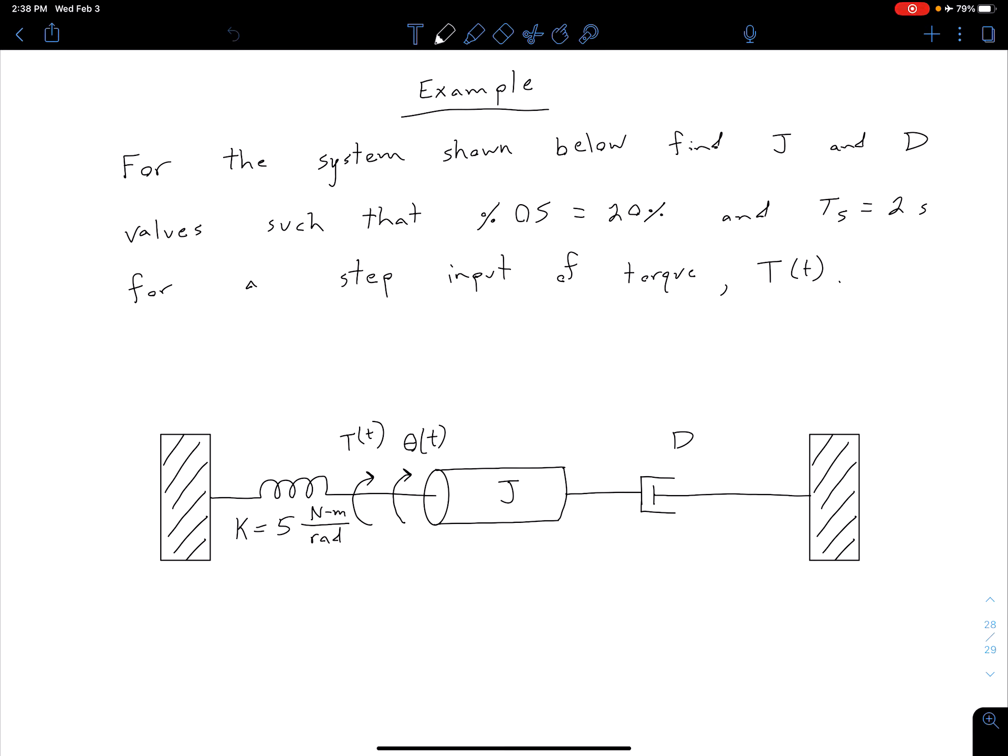So in this example we have some system which is shown below and we want to find J and D values such that our percent overshoot is 20% and our settling time T_S is 2 seconds for a step input of torque T(t).